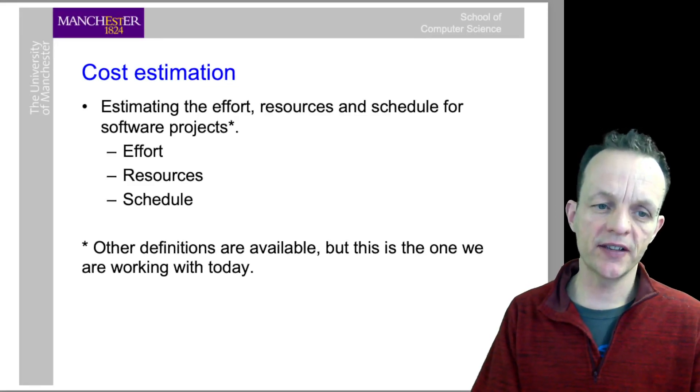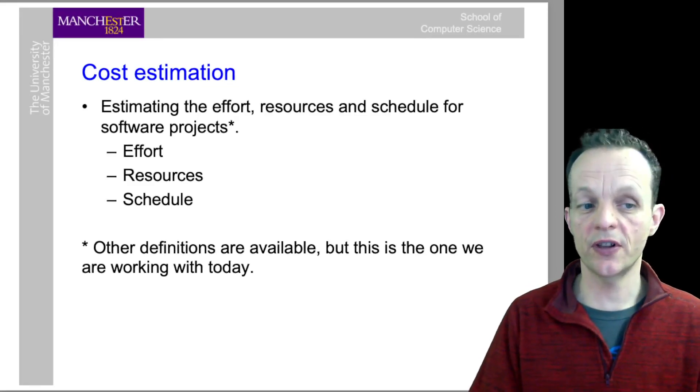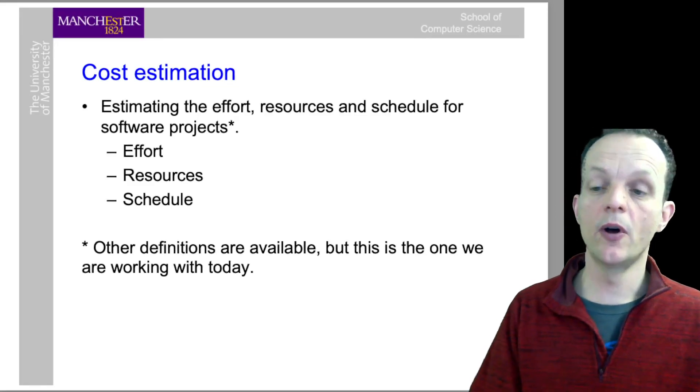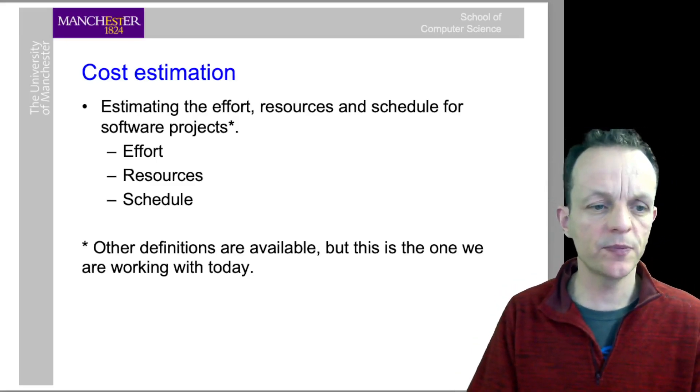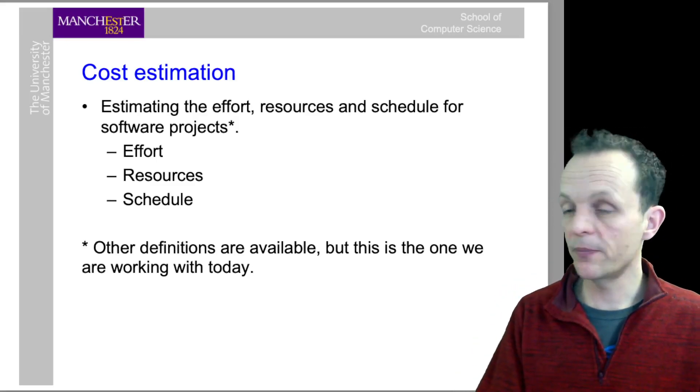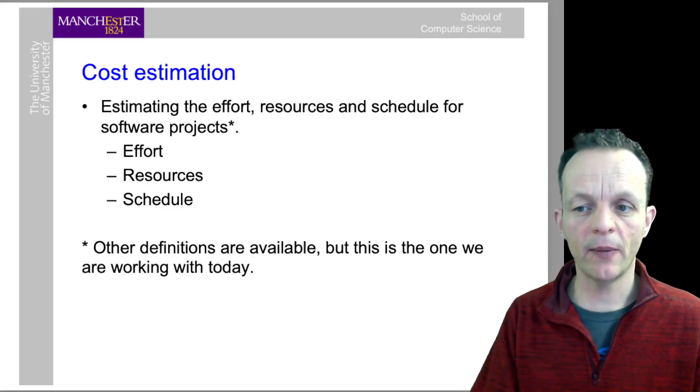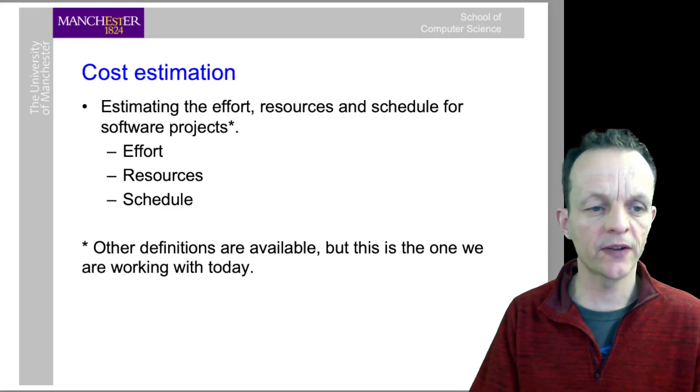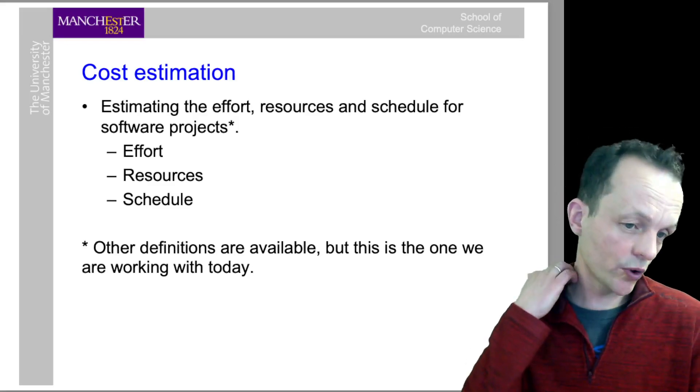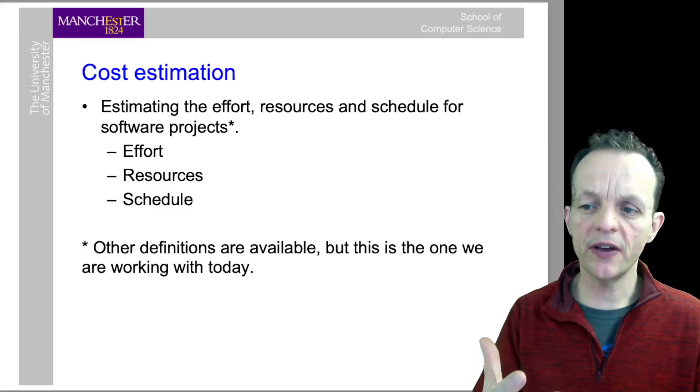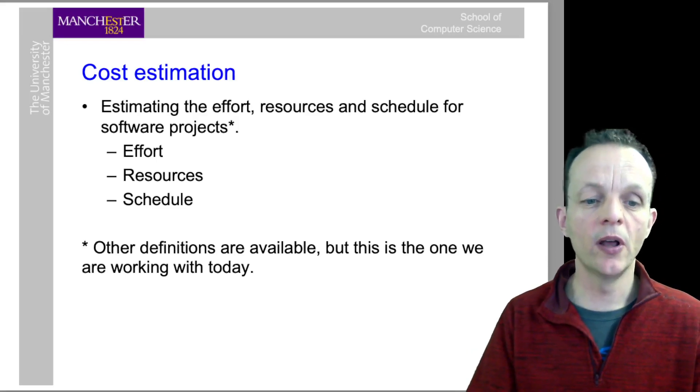Cost estimation is estimating the effort, resources and schedule for software projects. By effort we mean how hard it might be to do a particular job. Resources means principally time and people - how many people do you need to fix this bug or add this feature, how long will it take them, and what your schedule will look like. Other definitions of cost estimation are available, but this is the one we're using.